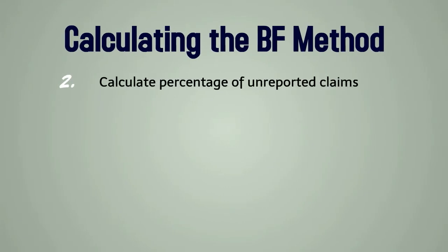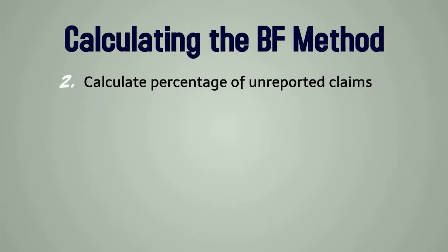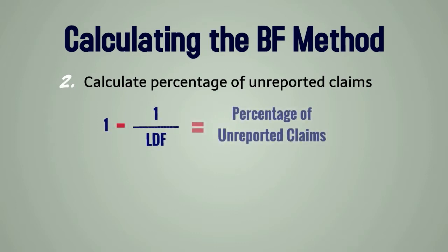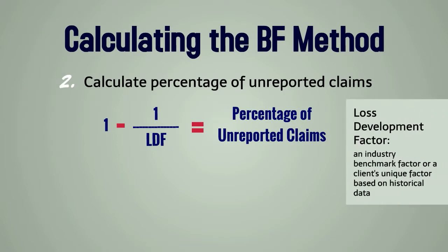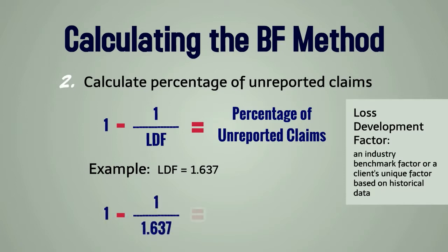Step two is to calculate the percentage of unreported claims. The percentage of unreported claims equals 1 minus 1 divided by the loss development factor. The loss development factors are either an industry benchmark factor or a client's unique factor based on historical data. In this example, the loss development factor is 1.637, so the percentage of unreported claims equals 1 minus 1 divided by 1.637, which equals 38.9%.